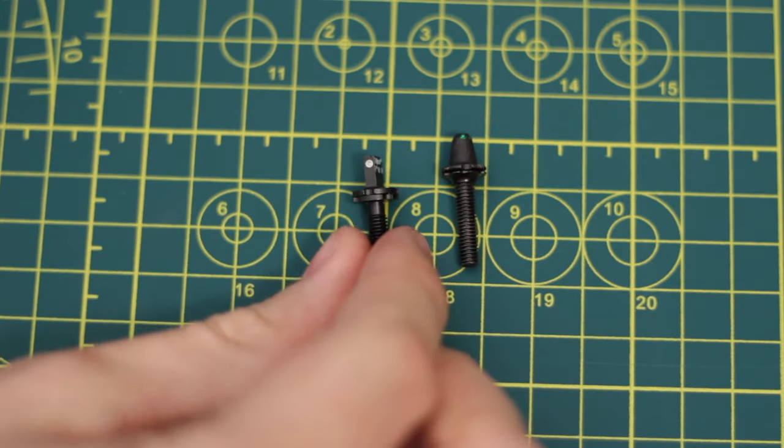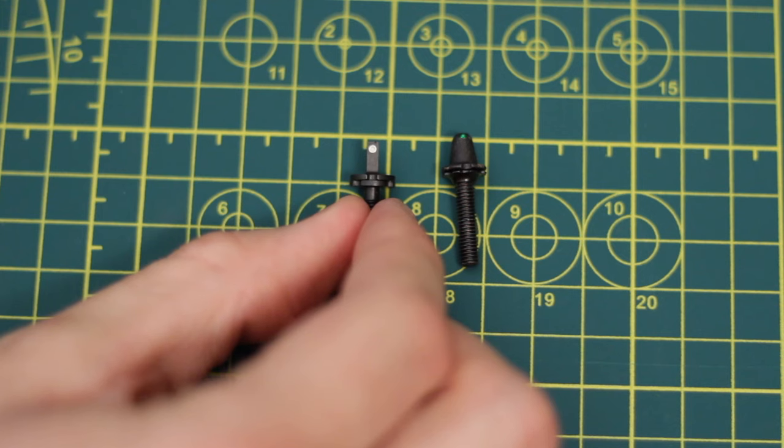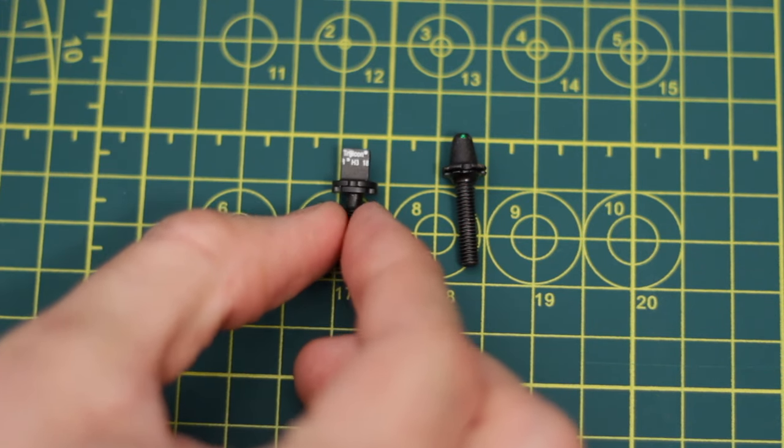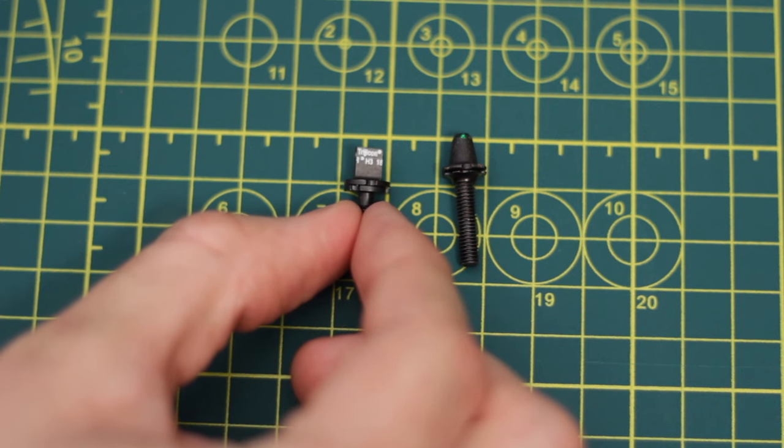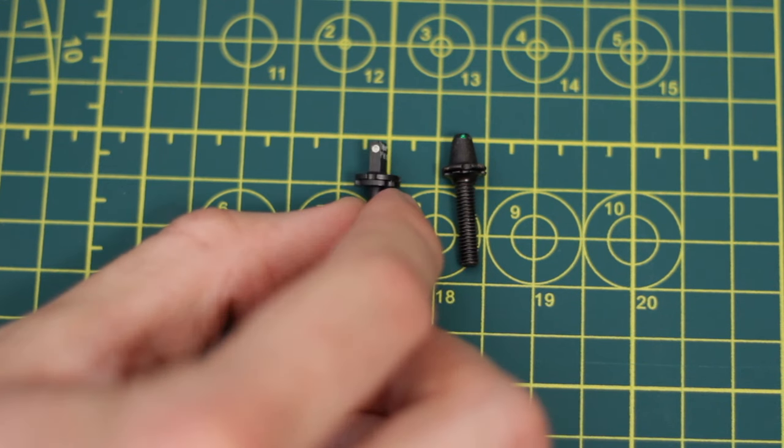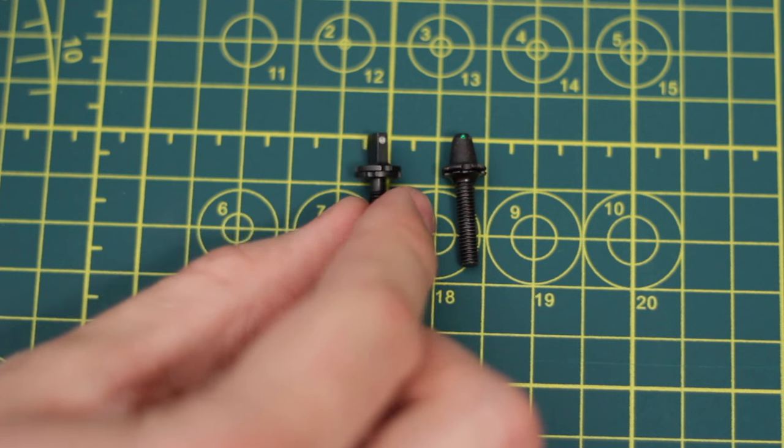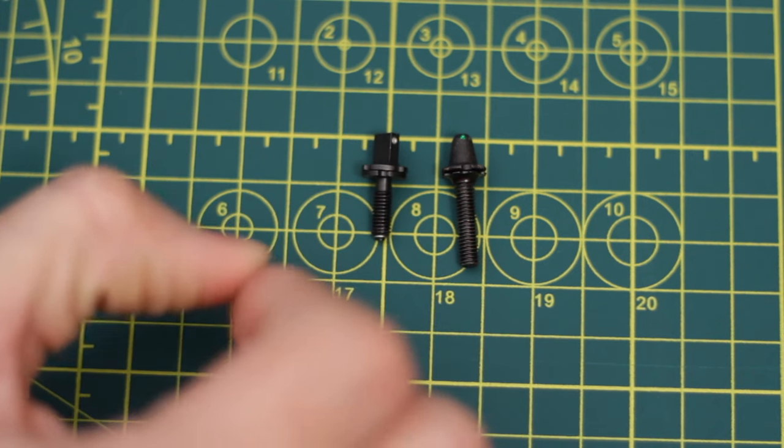But as you can see here in the video, the Tritium is not visible. This is a Trijicon sight post. If you read the date code on it, you see how it ends in an 18. That means this was manufactured in 2018. This is an old, decayed Tritium sight.